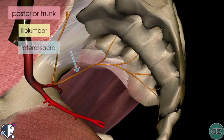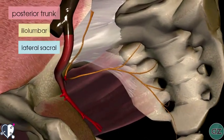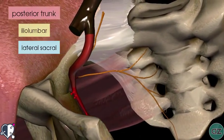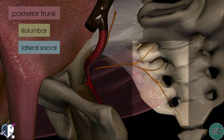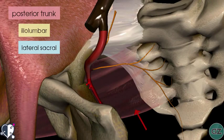The next branch is the lateral sacral arteries. Rotating the model, you can see the lateral sacral arteries entering the anterior sacral foramina. This artery runs just in front of the piriformis muscle, which has been made transparent.